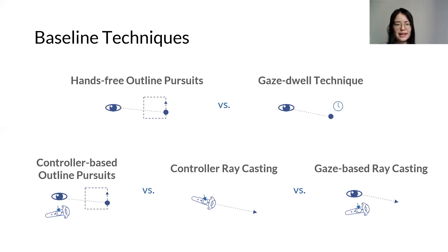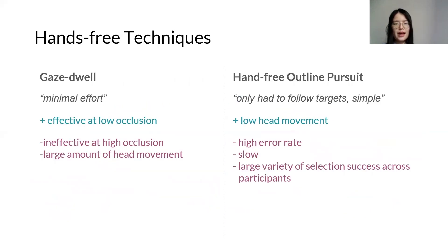Users found dwell-to-wheel to be effective for selection at low occlusion because it required minimal effort. However, selection was difficult at high occlusion because of the imprecision of the eye tracker and the large amount of head movement required. Hands-free outline pursuits required minimal head movement and showed no difference with dwell-to-wheel at high occlusion. However, it suffered from high selection times and error rates, despite feedback stating the interaction technique was simple. This was in part due to some participants not reaching the required threshold for selection, which resulted in large variance across participants.